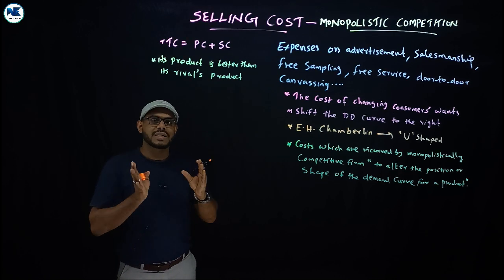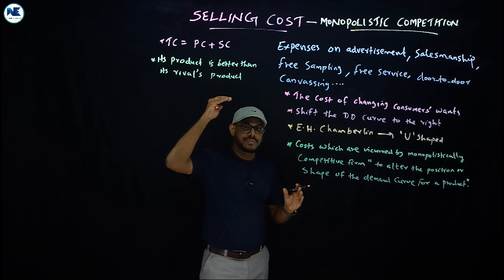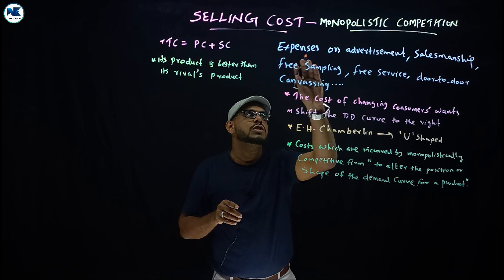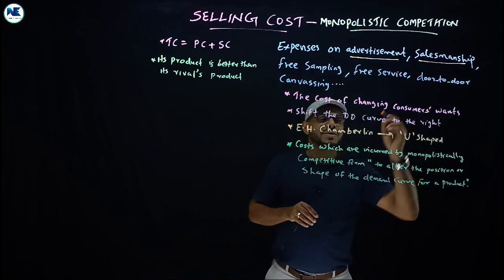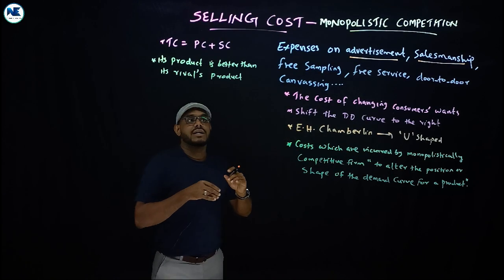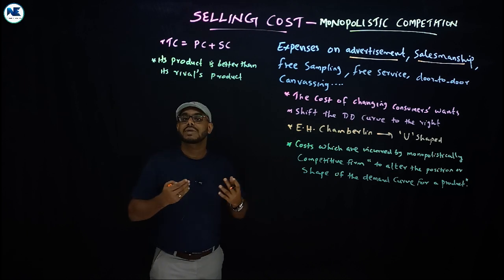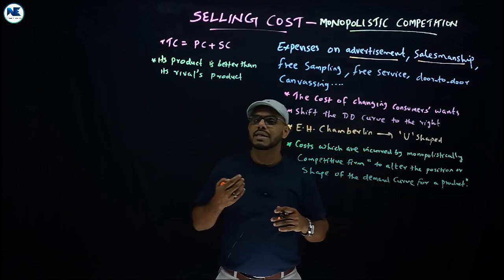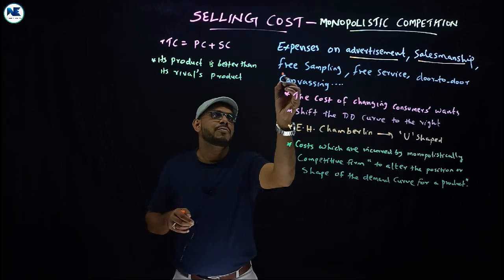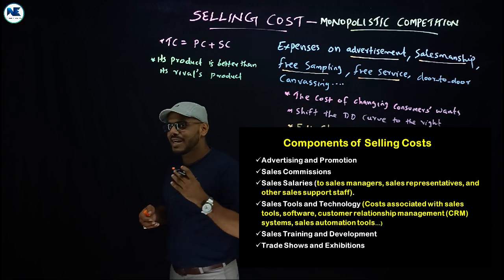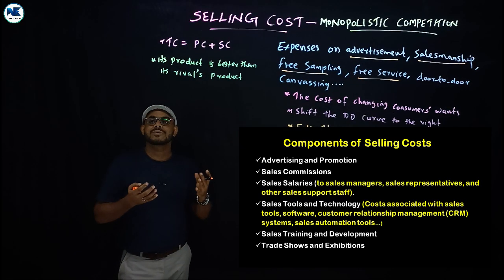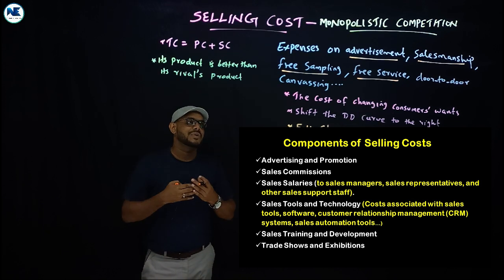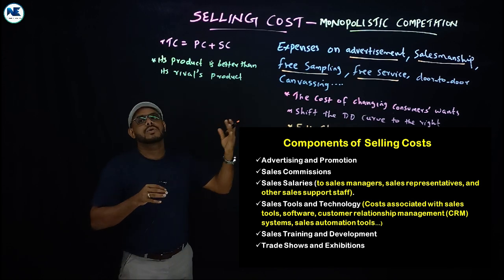There are other forms of expenses related to selling cost. Selling costs are the expenses or costs on advertisement, salesmanship, sales promotion. Free sampling—for example, six months free sampling. Free service—like refrigerator servicing—to attract customers and promote the sales of differentiated products.